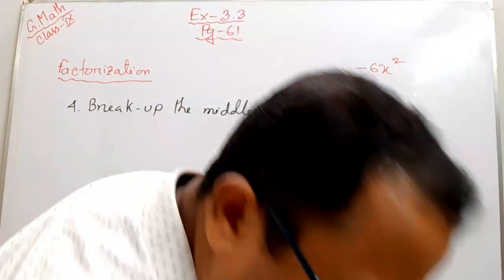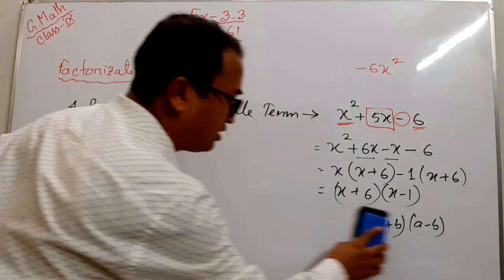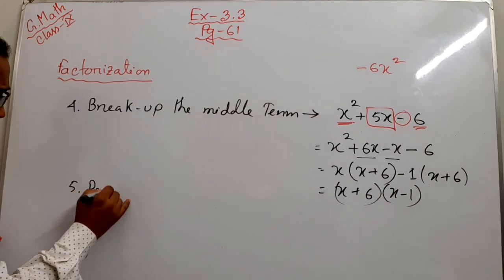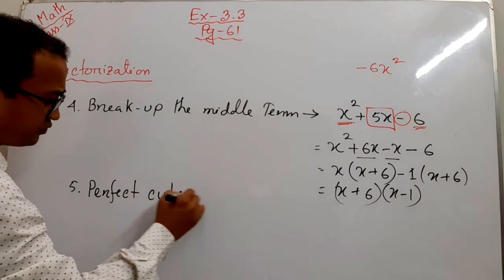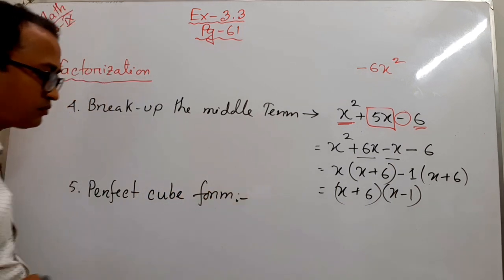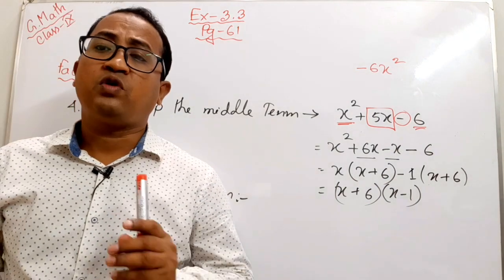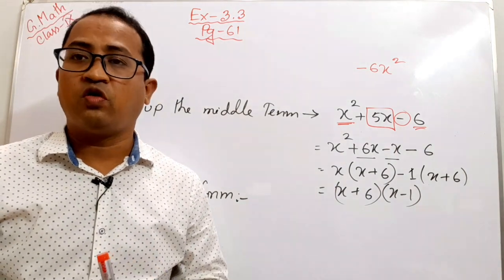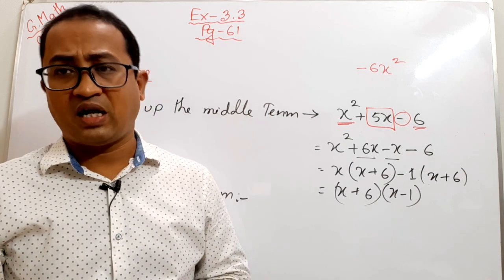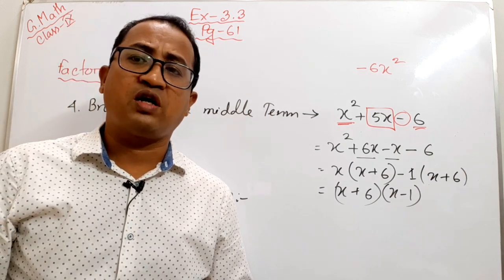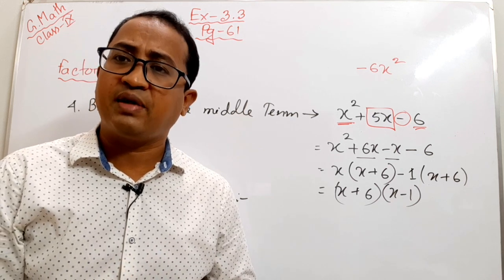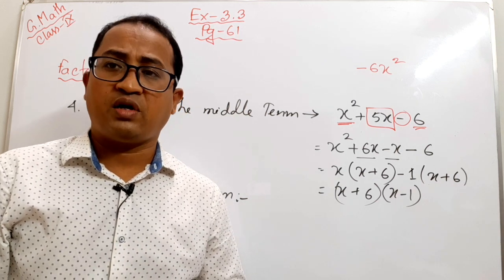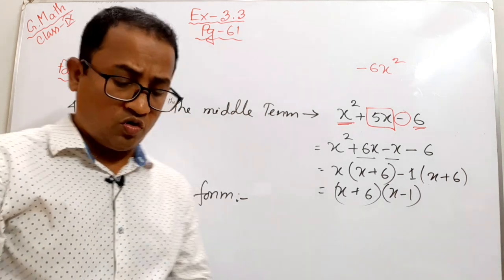Rule number five: if none of the above steps work, we convert the expression into a perfect cube form. For this, there should be four terms, since (a + b)³ = a³ + 3a²b + 3ab² + b³ has four terms. Similarly, (a − b)³ also has four terms. So when an expression has four terms, you can try to convert it into a perfect cube.